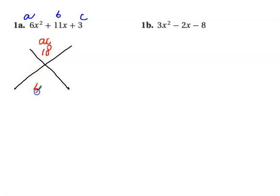And on the bottom we're going to write the sum, so we're going to write 11. Now what we need to do is find two numbers that would multiply to 18 and add to 11. Basically we have to have two numbers whose product is going to be 18 and the sum is going to be 11.